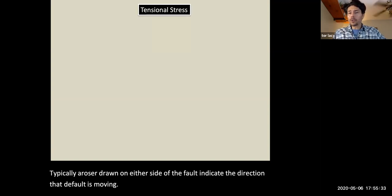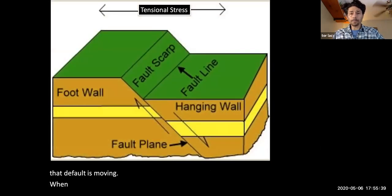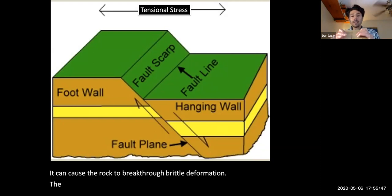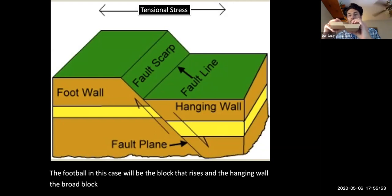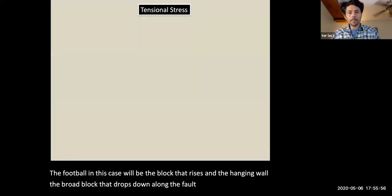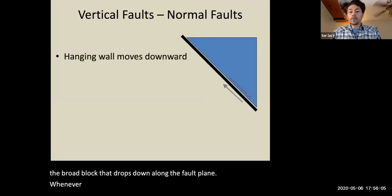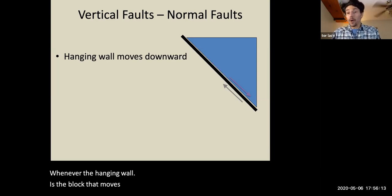When tensional stress acts on a body of rock, it can cause the rock to break through brittle deformation. And the foot wall, in this case, will be the block that rises, and the hanging wall, the block that drops down along the fault plane. The hanging wall is the block that moves downward. It is called a normal fault by definition.